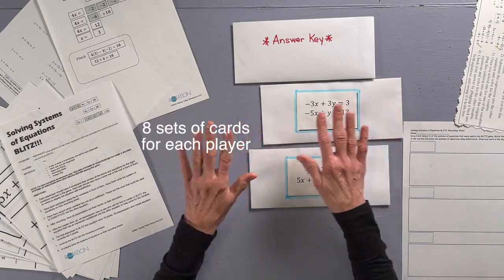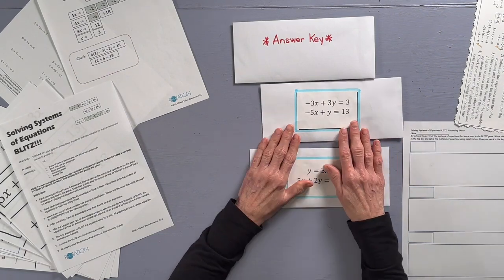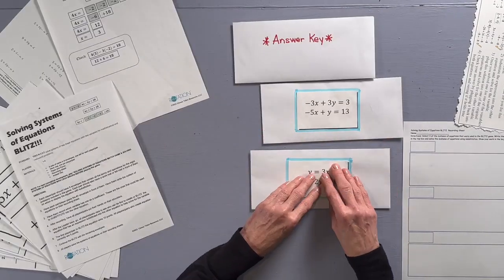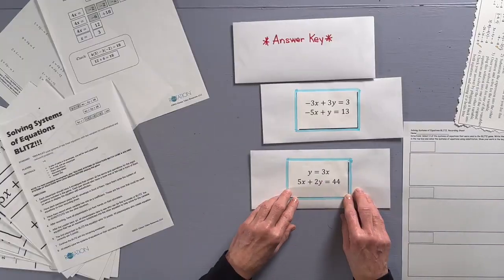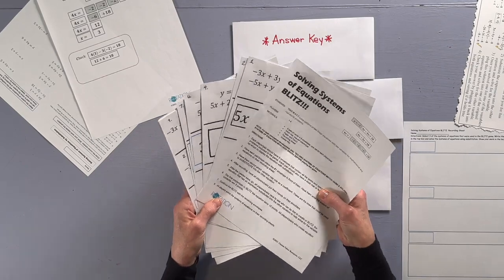For this game, you will need eight sets of cards for each player or pair. Each set goes with a system of equations that can be solved by substitution. I organize my cards into envelopes and put the system card on the front. Now, I only have two here. All are available on glennataber.com.